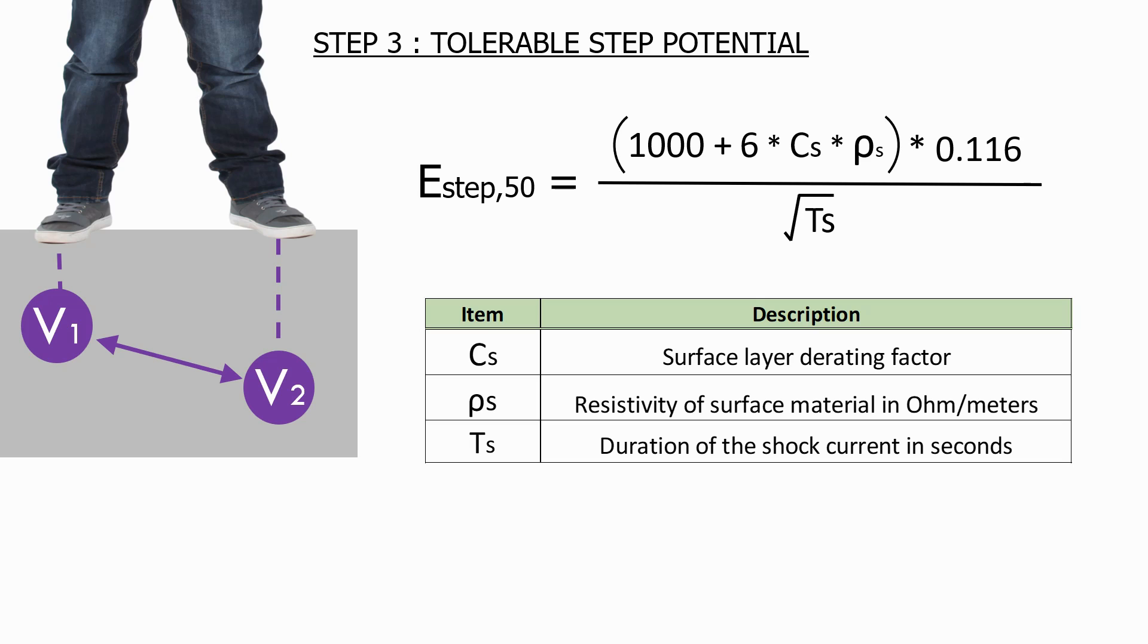We have three main parameters for this calculation. The first is CS, which is the surface layer derivative factor that we've looked at previously. The next is ρs, which is the resistivity of the surface material in ohm meters. And finally, we have Ts, which is the duration of the shock current in seconds.